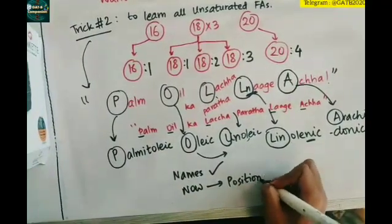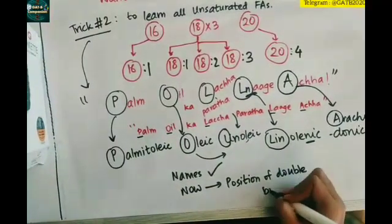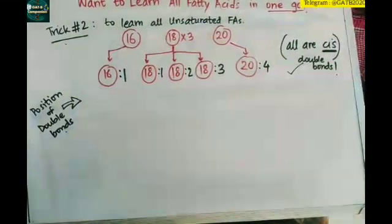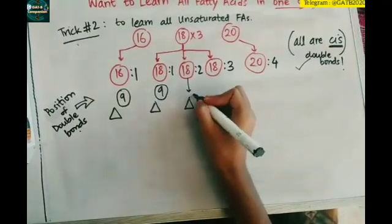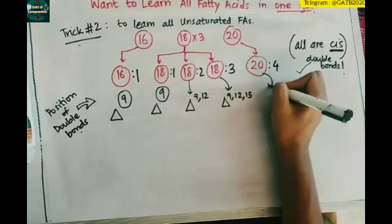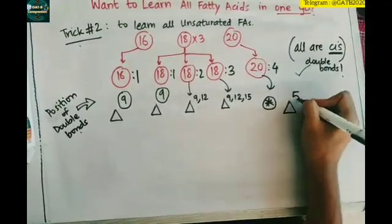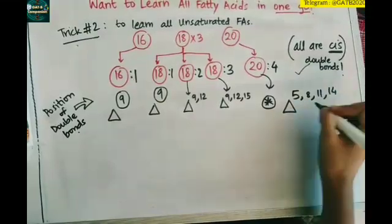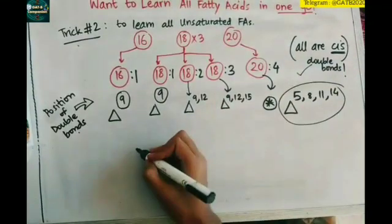Now let's talk about the position of the double bond. We know the number of double bonds mentioned in black color. The position of the double bonds: we know about the delta nomenclature, that's starting from the carboxyl end. At the ninth position we have a double bond, at the ninth position we have a double bond, at the ninth as well as the twelfth position, we have double bonds 9, 12, 15.